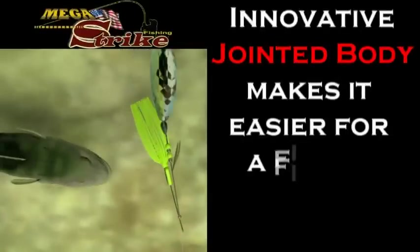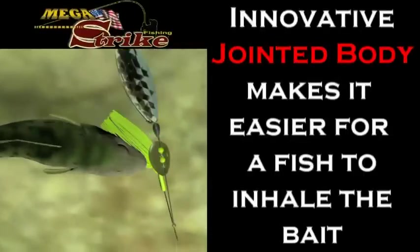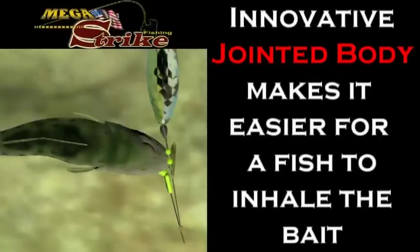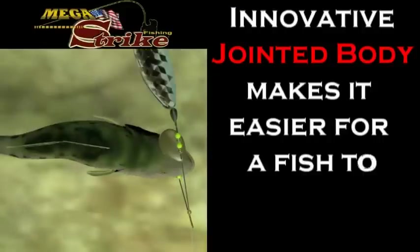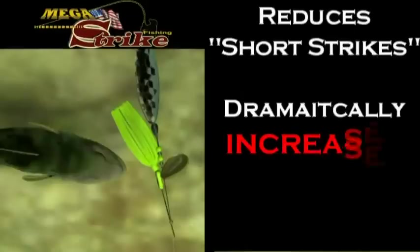One of the key features of the new Strike Back Spinner Bait is that it's jointed. It comes in two sections. The back section or the hook section is free flowing. Now it only takes half of the energy for the bass to inhale the hook end of the bait into the fish's mouth.